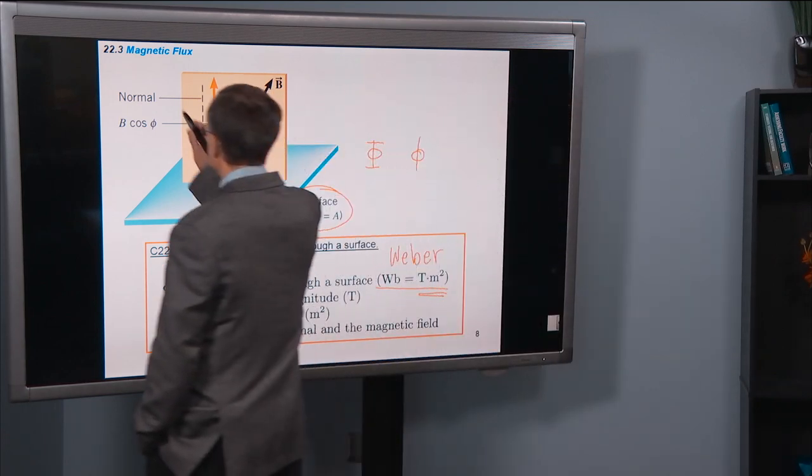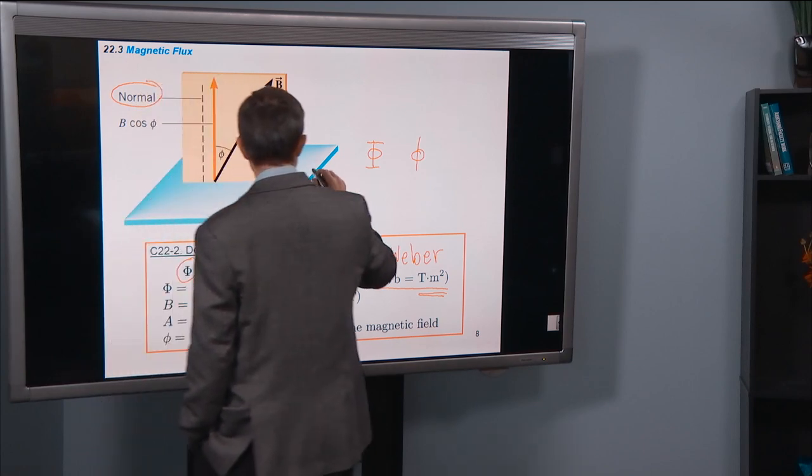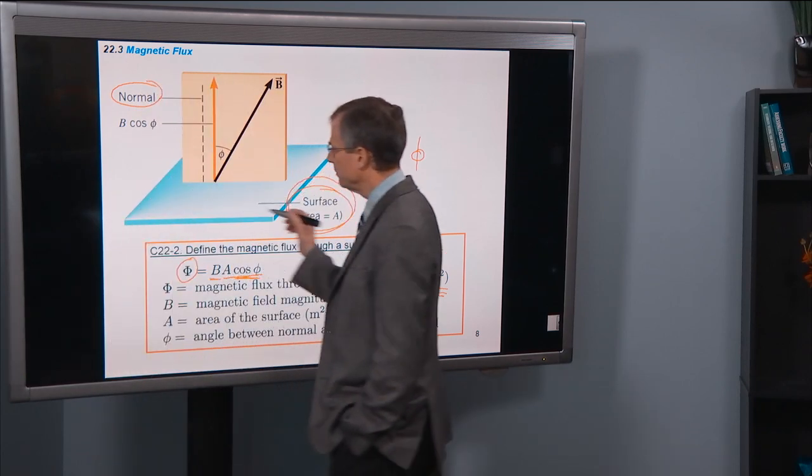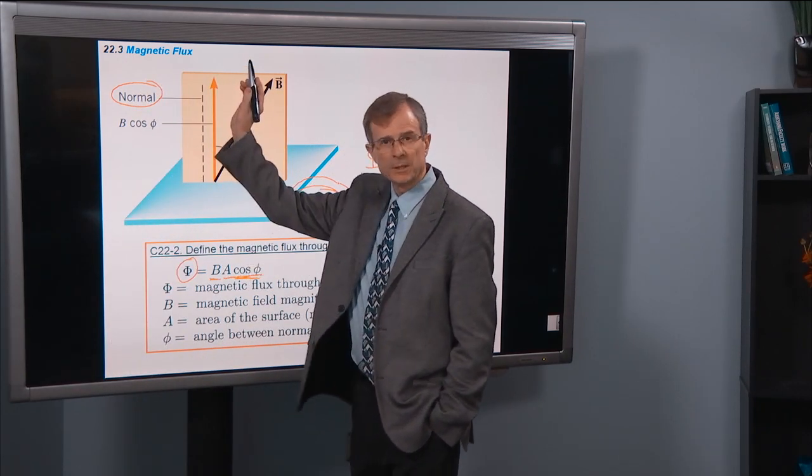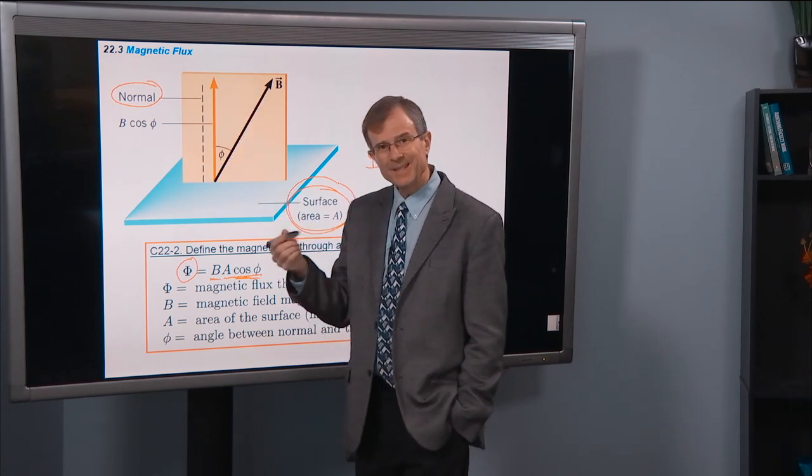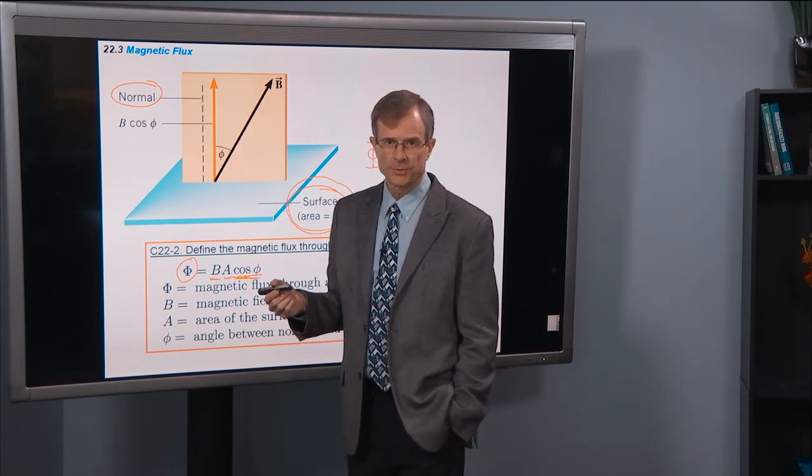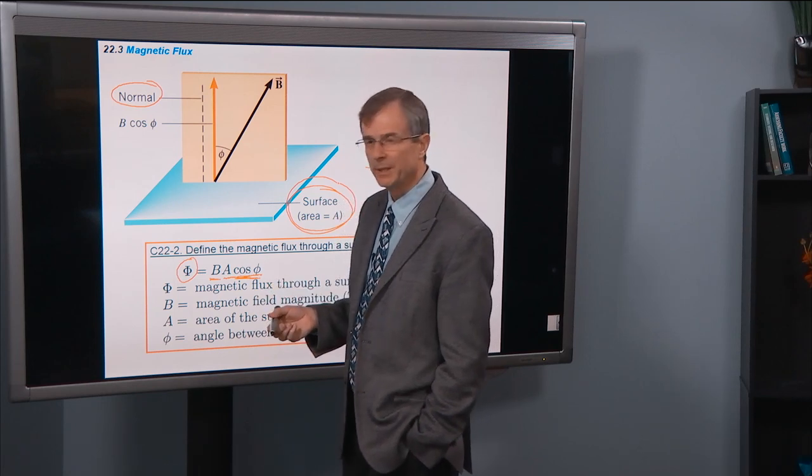What's the normal? Just a reminder, here's our surface, denoted in blue here. The normal is denoted as a red arrow. First of all, it's the direction perpendicular to the surface. Normal means perpendicular in physics.